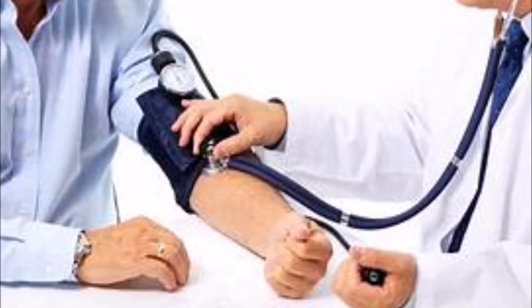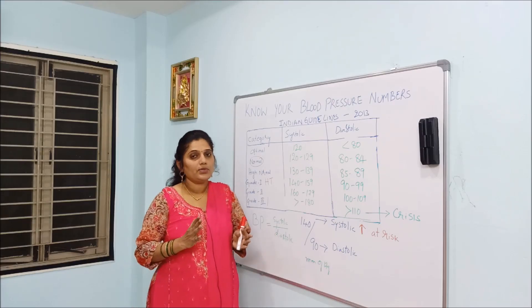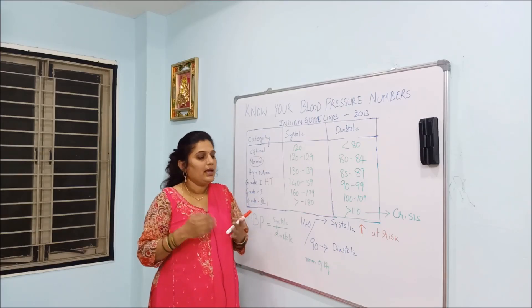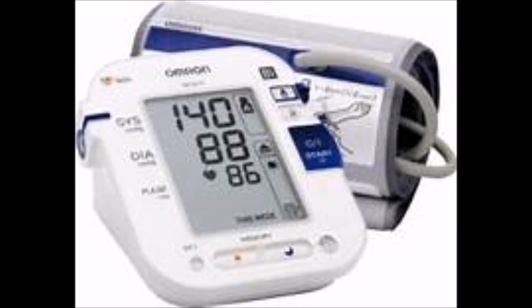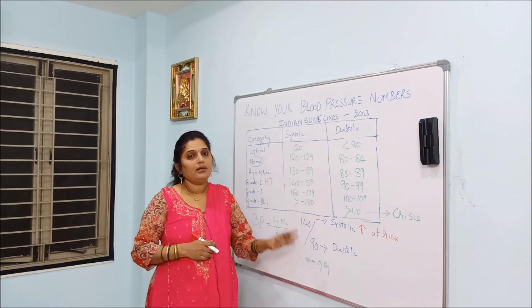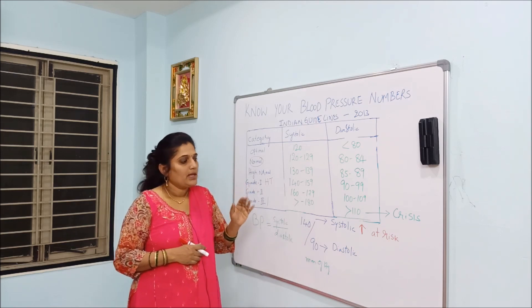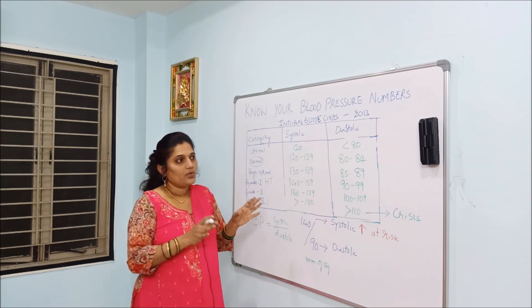When we go to check a doctor and we see a BP reading like 140 by 90, several questions arise in our mind: what is this 140 and 90, and what does it mean when these numbers increase? We will answer these questions.